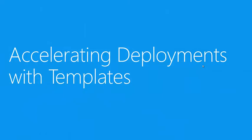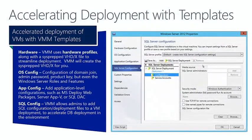Now let's take a look at accelerating deployments with templates. In Virtual Machine Manager, it's important to think about templates as the final result of combining a series of layers. The first of these layers is the hardware layer, which contains the relevant virtual machine hardware settings such as CPU, memory, network, etc., but also a sysprep.vhtx file. VMM also handles the sysprepping for you from a gold VM you create prior.